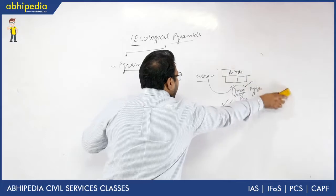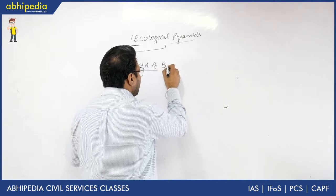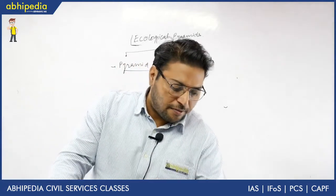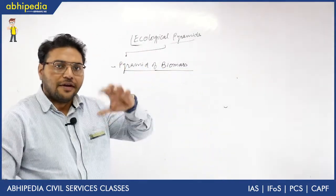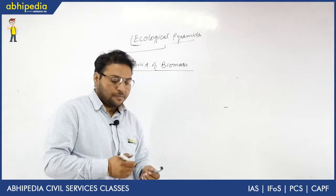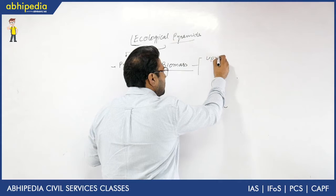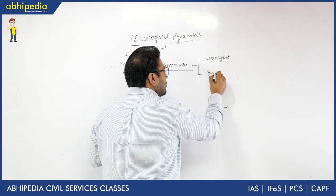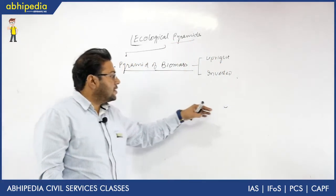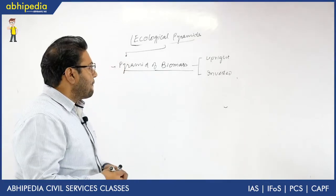The next type is the Pyramid of Biomass. Biomass is basically dry weight. It is further divided into two: upright and inverted. Here the base is designed on the basis of biomass rather than number. The inverted pyramid of biomass is also important to know.